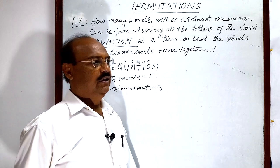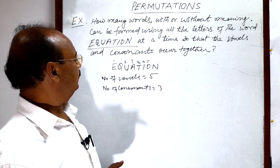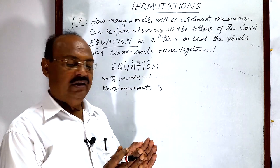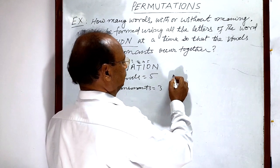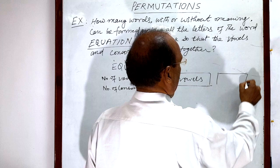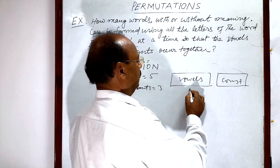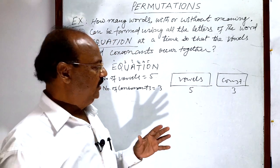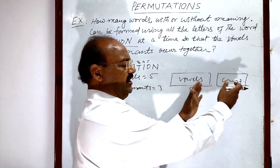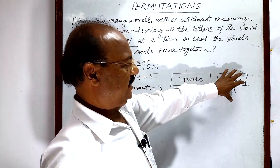Total number of letters is 8. With the help of these 8 letters, we have to form all possible words with or without meaning so that all the vowels and all the consonants remain together — all vowels together and consonants together. Suppose all vowels are in one group and all consonants are in another group. Total number of vowels is 5 and total number of consonants is 3. We can arrange these two sets among themselves. So we have two sets: one set of vowels and one set of consonants.